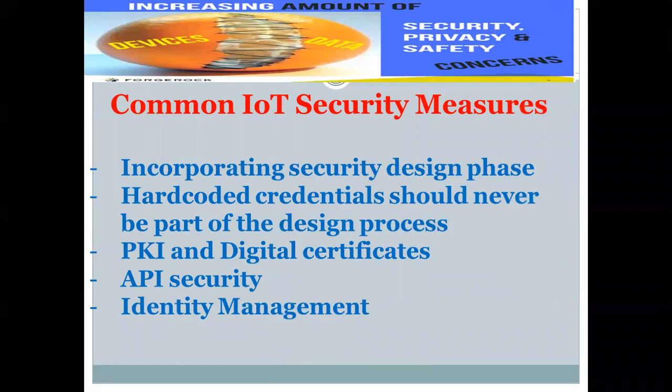What are the common IoT security measures? Incorporating security in the design phase: IoT developers should include security at the start of any consumer, enterprise, or industrial-based device development. Enabling security by default is critical, as well as providing the most recent operating system and using secure hardware. Hard-coded credentials should never be part of the design process. As an additional measure, developers can require that credentials be updated by a user before the device functions. If a device comes with default credentials, users should update them using a strong password, multi-factor authentication, or biometrics where possible.